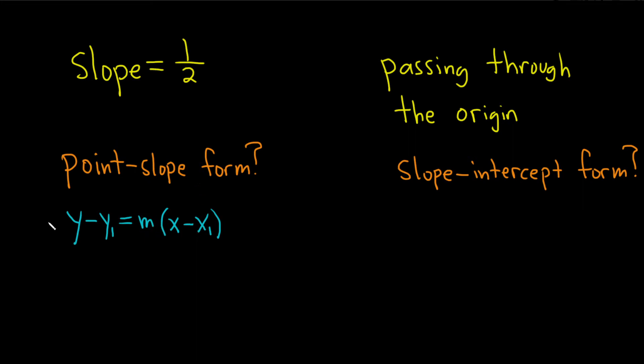So now we just have to plug in everything we have. So the one-half is the slope and that's the variable m. Then we're told it passes through the origin. That's the point. So that means that our x1 is 0 and our y1 is also 0. So all we do now is plug everything into our formula. So this is y minus 0 equals, and then m is one-half, so one-half parentheses x minus 0.